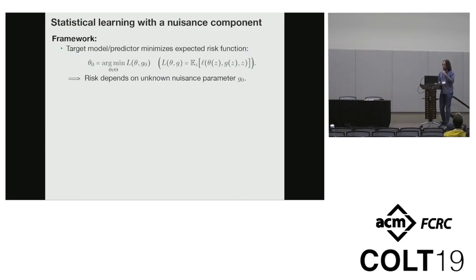This leads us to define a general framework we call statistical learning with a nuisance component. In this setting, we have a population risk L, which depends on a target parameter theta and a nuisance parameter G. There's a true unknown nuisance parameter G naught. What we'd like to do is find the target parameter that minimizes this risk when G naught is plugged in. But just like the policy learning setting, the problem is we don't know G naught, so we can't immediately start minimizing the risk to find theta.